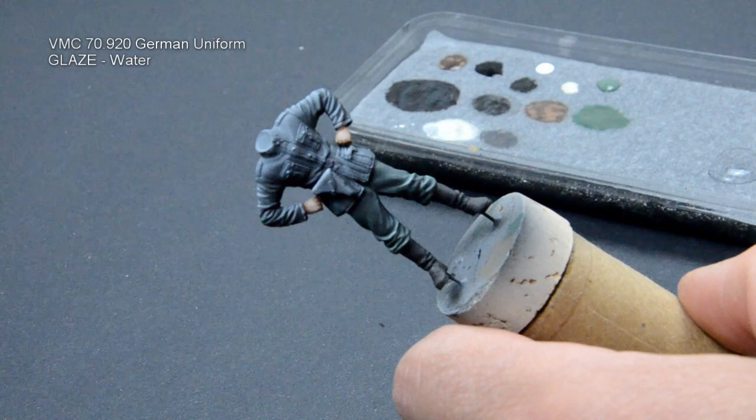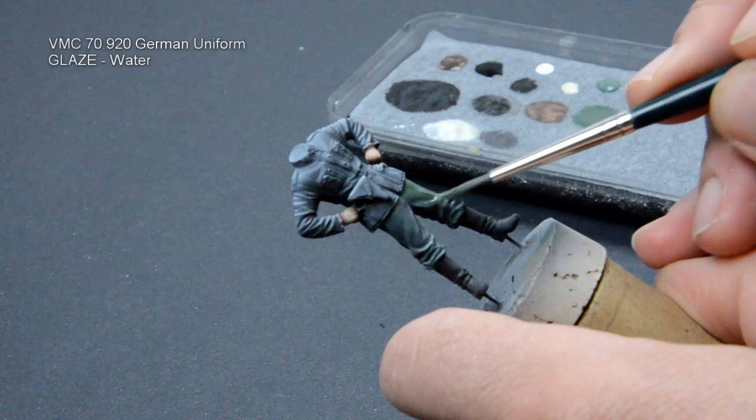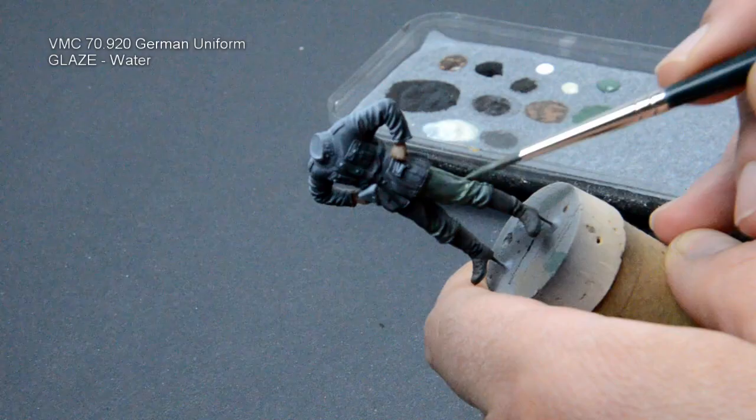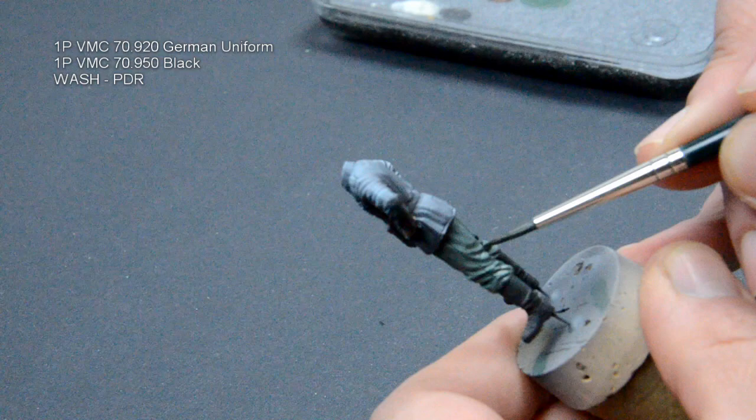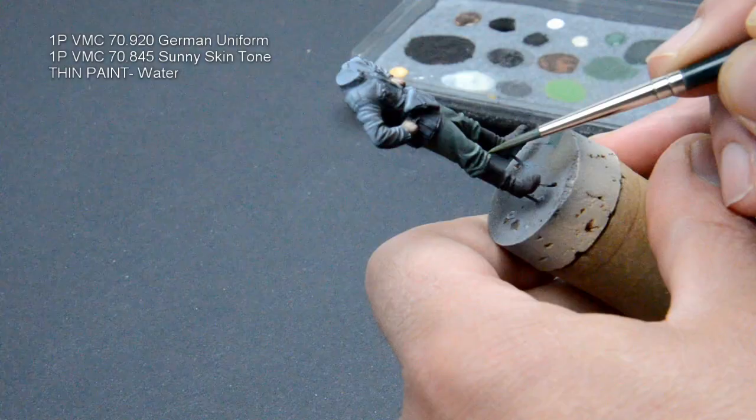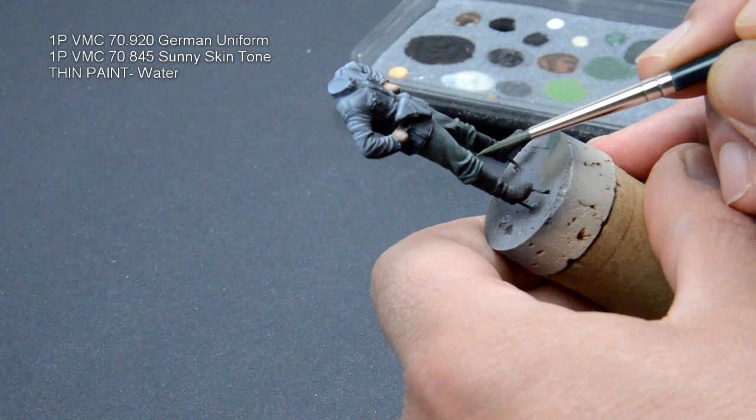The German uniform color was used for Klaus's pants. Here you can see how it looks after the first glaze layer is applied. We will do a second one. Black was added to the base for the shadows. Those were applied as a wash. My favorite color for highlights is sunny skin tone. I picked up the top parts of the folds.